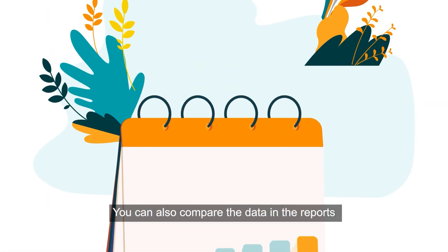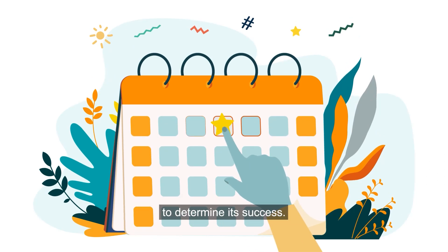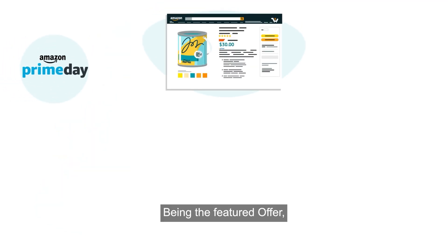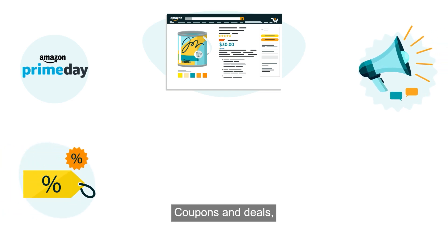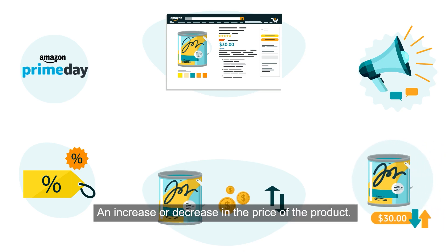You can also compare the data in the reports before, during, and after an event to determine its success. Events include Prime Day, being the featured offer, advertising and campaigns, coupons and deals, automatic pricing for the product, and an increase or decrease in the price of the product.